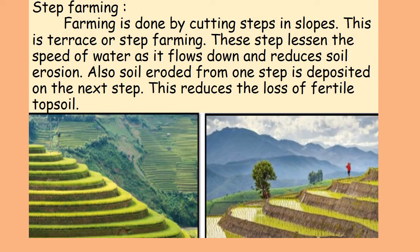Step Farming. Farming done by cutting steps in slopes is called terrace farming or step farming. These steps lessen the speed of water as it flows down and reduce soil erosion. Soil eroded from one step is deposited on the next step, reducing the loss of fertile topsoil.